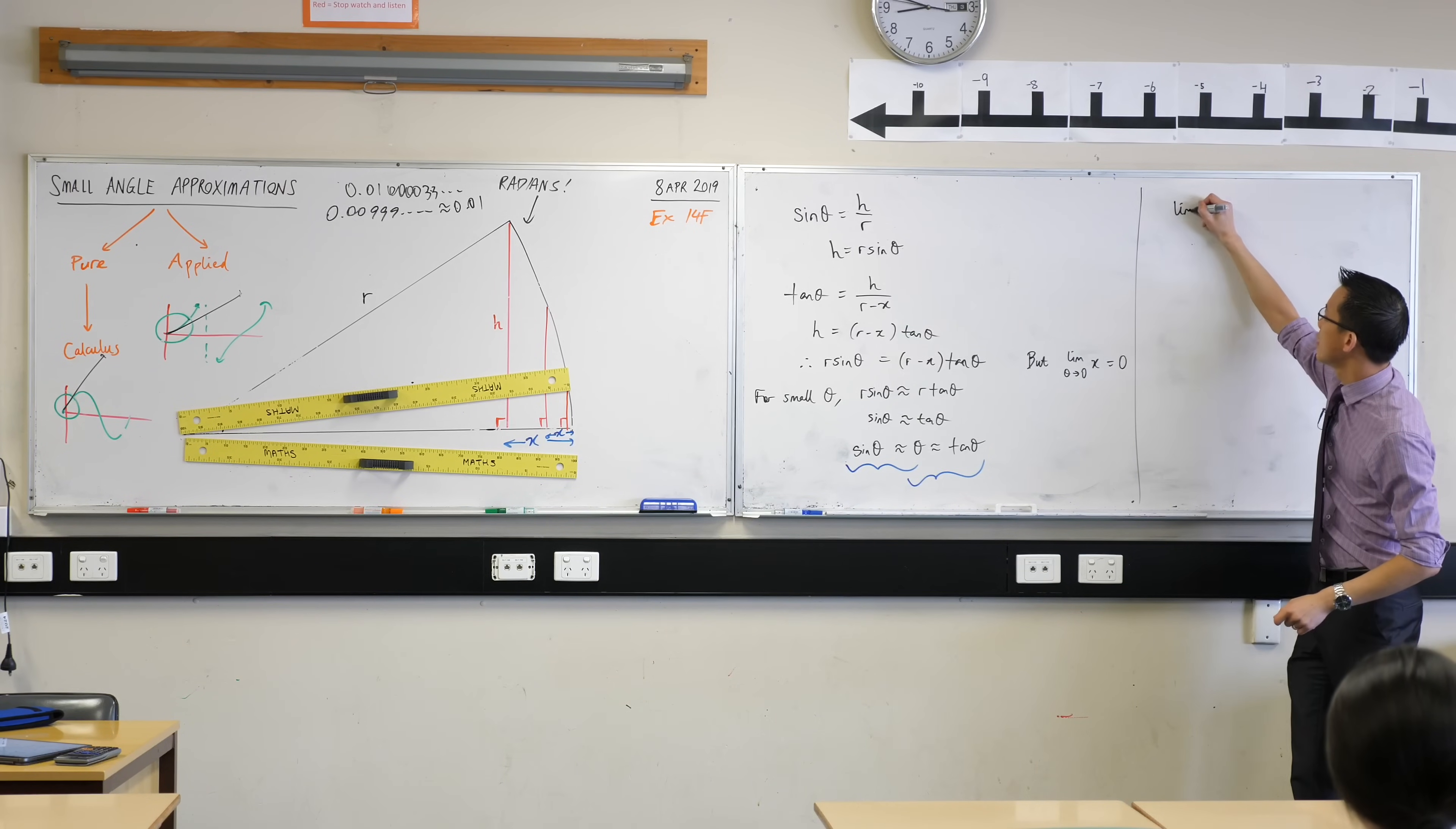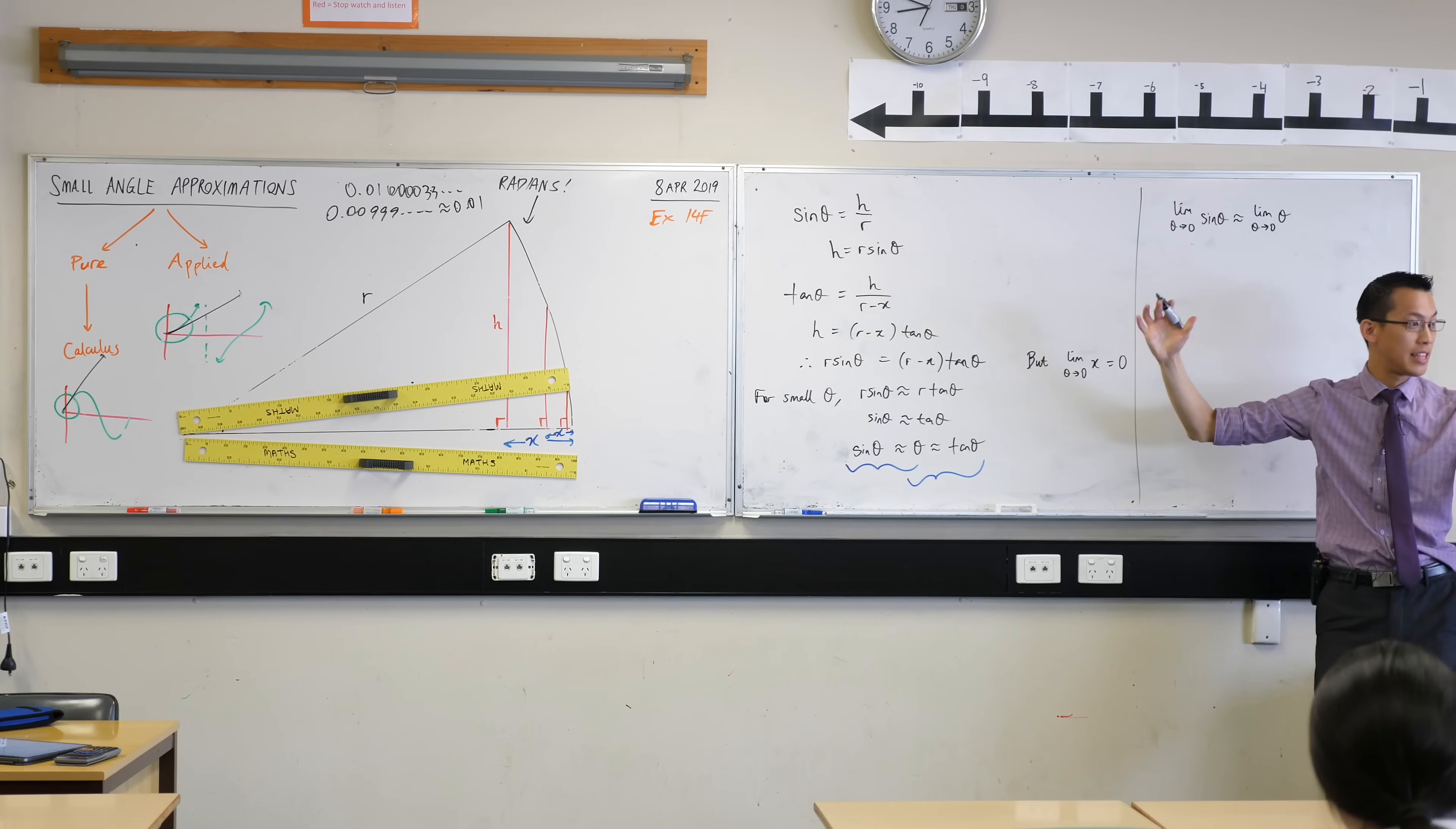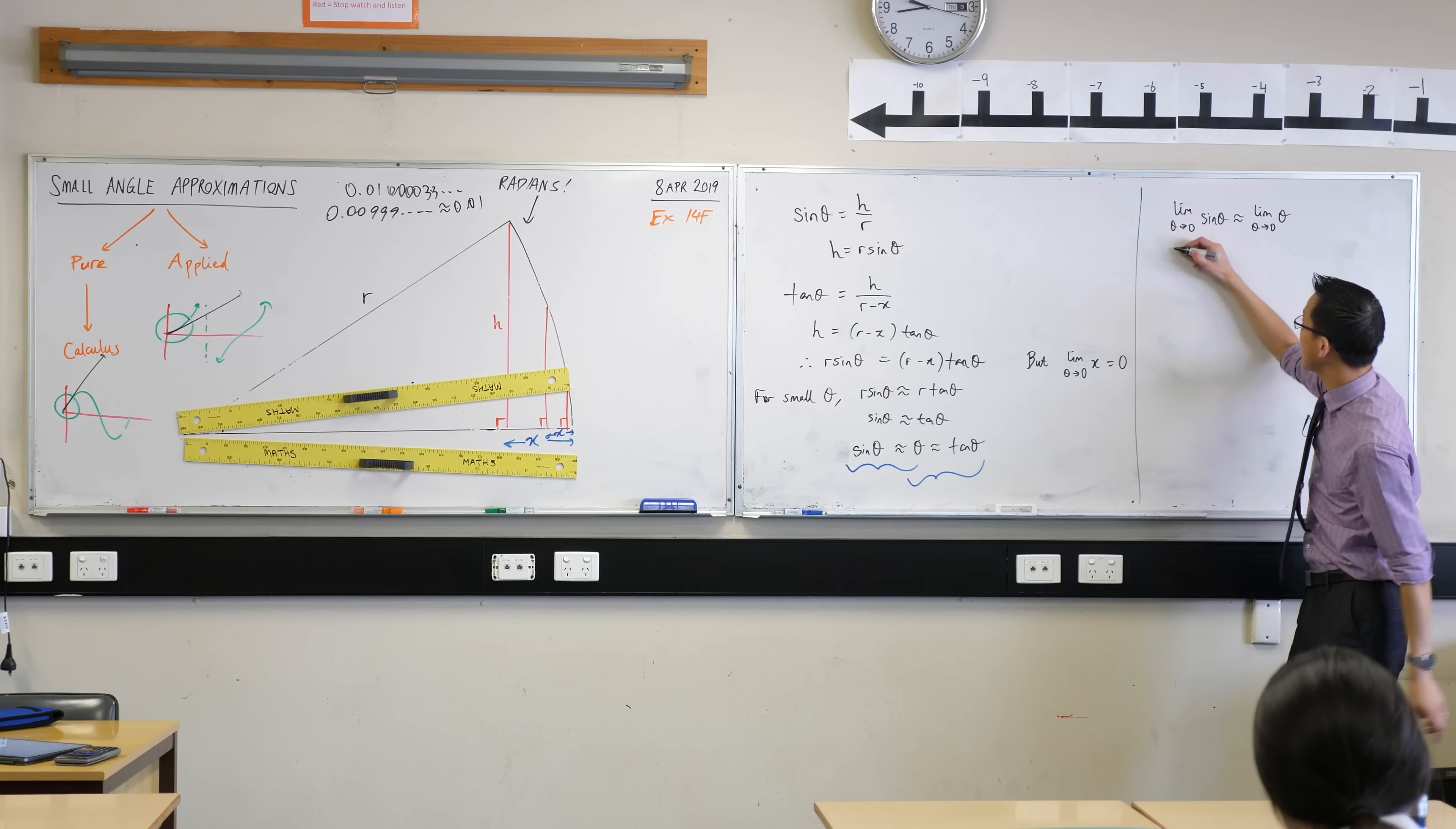We're going to say the limit as theta approaches 0, because that's sort of overarching this whole thing. We've taken the limit at about this point here, and everything else that follows is within that limit. Of sine theta is approximately equal to the limit as theta approaches 0 of theta itself. That's what we've just established, and you even tested it out empirically.